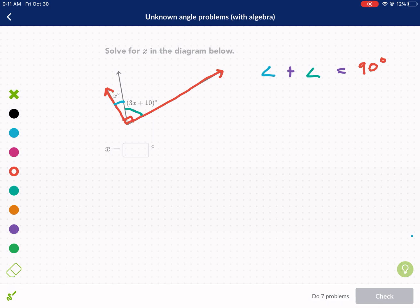So now we're just going to input some values. We have X plus 3X plus 10, and then we know it's going to equal 90. We're going to combine like terms. We get 4X plus 10 equals 90. We subtract 10 from both sides. We have 80 equals 4X. We divide by 4, and we get X equals 20. There's our answer.